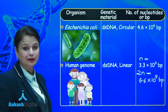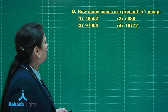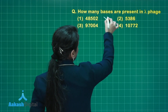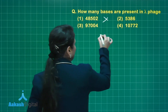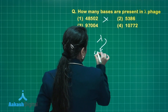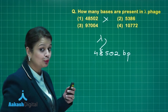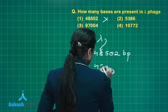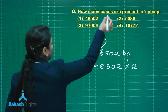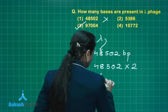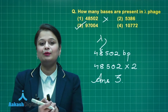Let's take up a practice question: How many bases are present in lambda phage? Many of you will say 48,502, but that is not the right answer — the question asks about bases, not base pairs. In lambda phage, 48,502 base pairs are present, and to convert to bases we multiply by 2: 48,502 × 2. So the right answer is option number three.